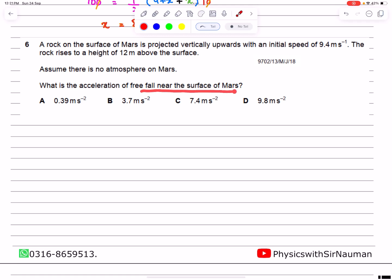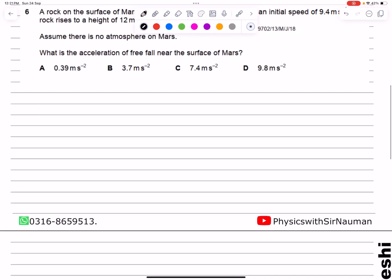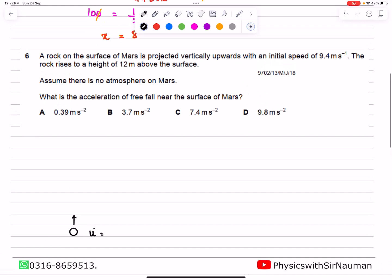What is the acceleration of free fall near the surface of Mars? Let's say we have an object that we throw in the upward direction with an initial speed of 9.4 meters per second.